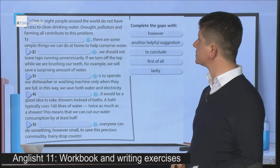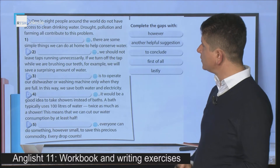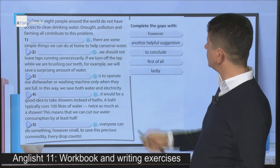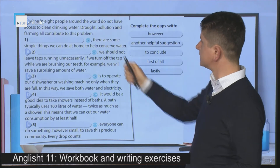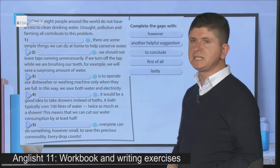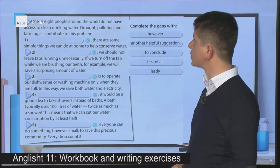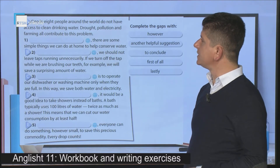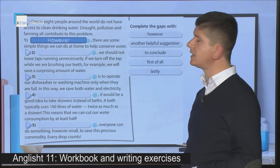Let's move on with another exercise related to writing an essay providing solutions to problems. We see that the essay consists of five paragraphs and the linking words are here. We are going to complete the essay with these words. Let's read the essay together. The first paragraph reads: 'One in eight people around the world do not have access to clean drinking water. Drought, pollution and farming all contribute to these problems. There are some simple things we can do at home to help conserve water.' We put 'however' after the comma here.